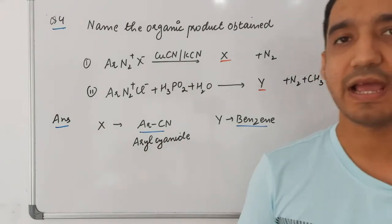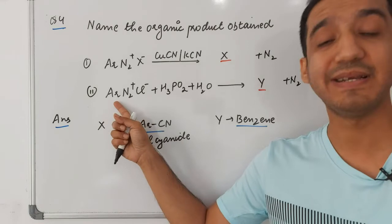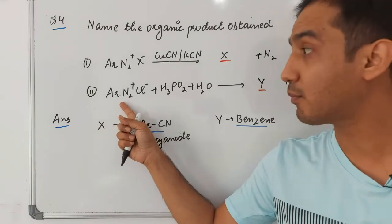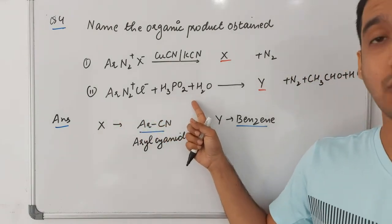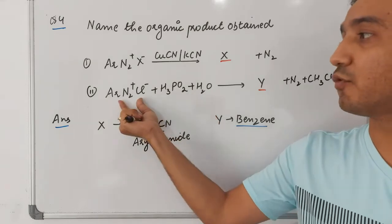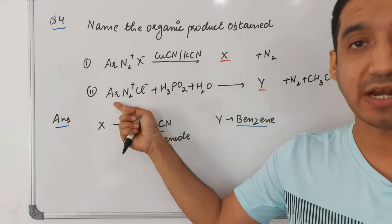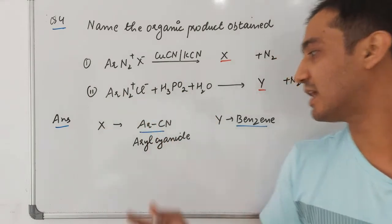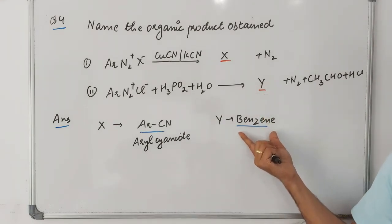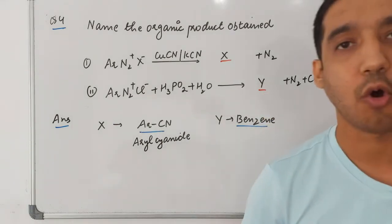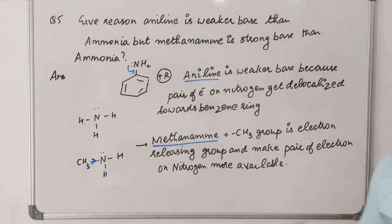Next reaction: when benzene diazonium chloride reacts with H₃PO₂ and H₂O, the diazonium group gets removed and hydrogen is added. As a result, the compound formed is simply benzene.